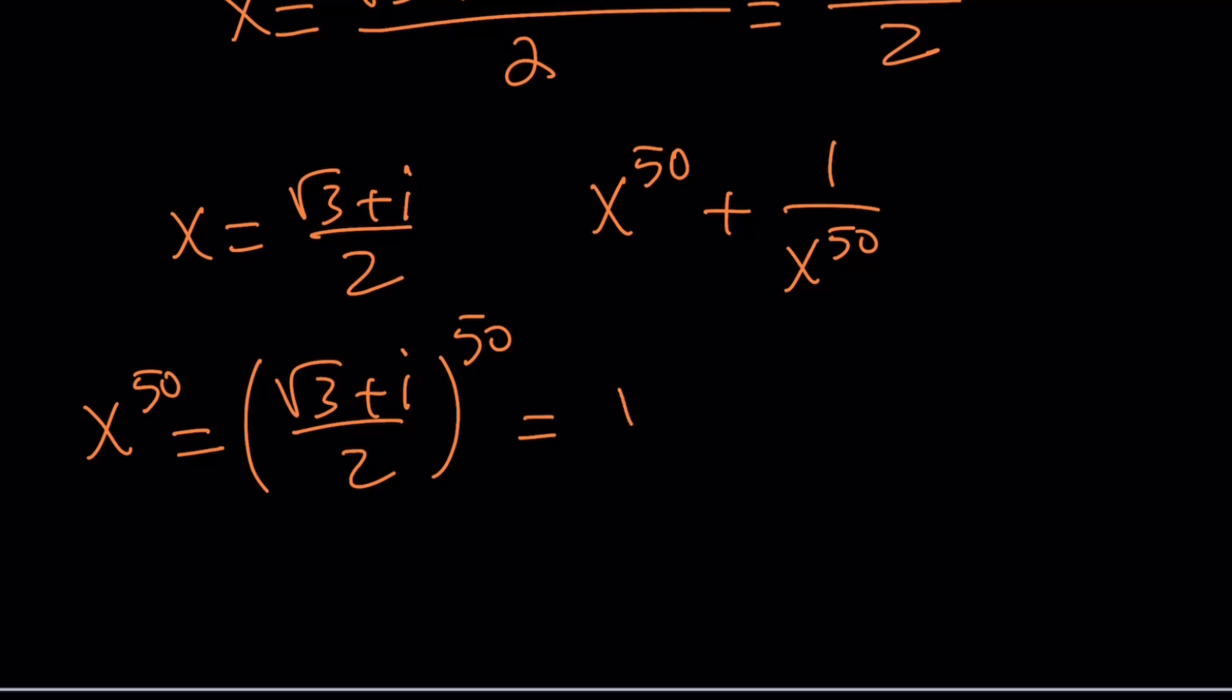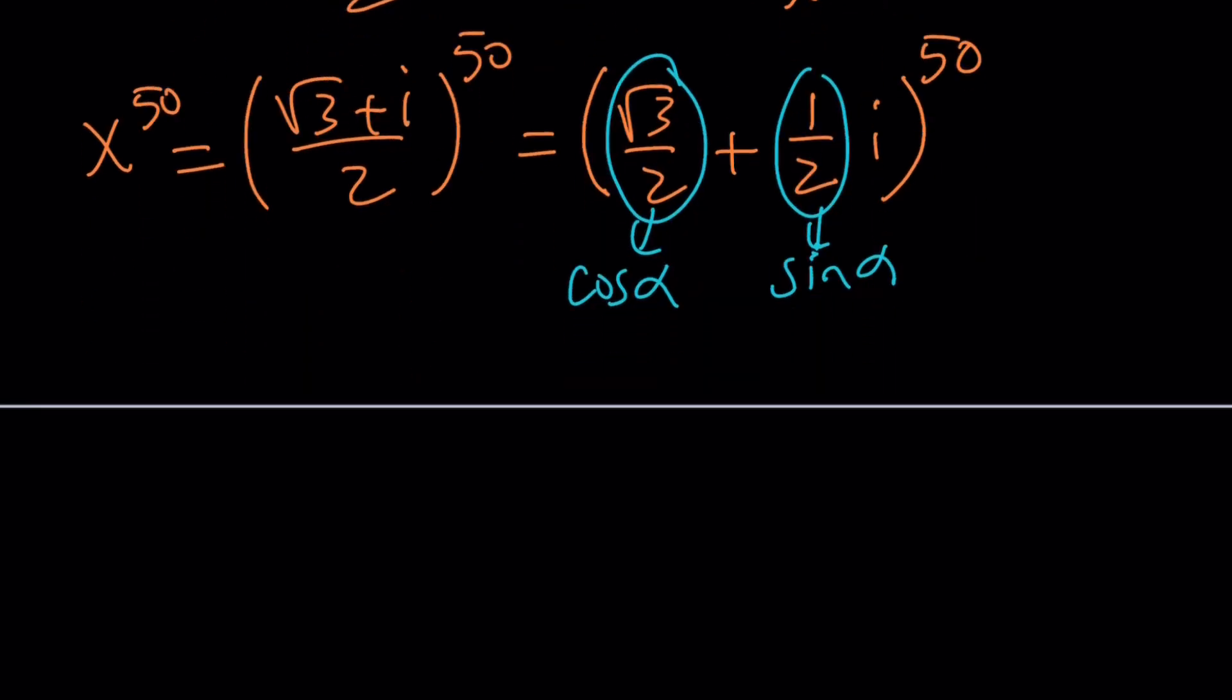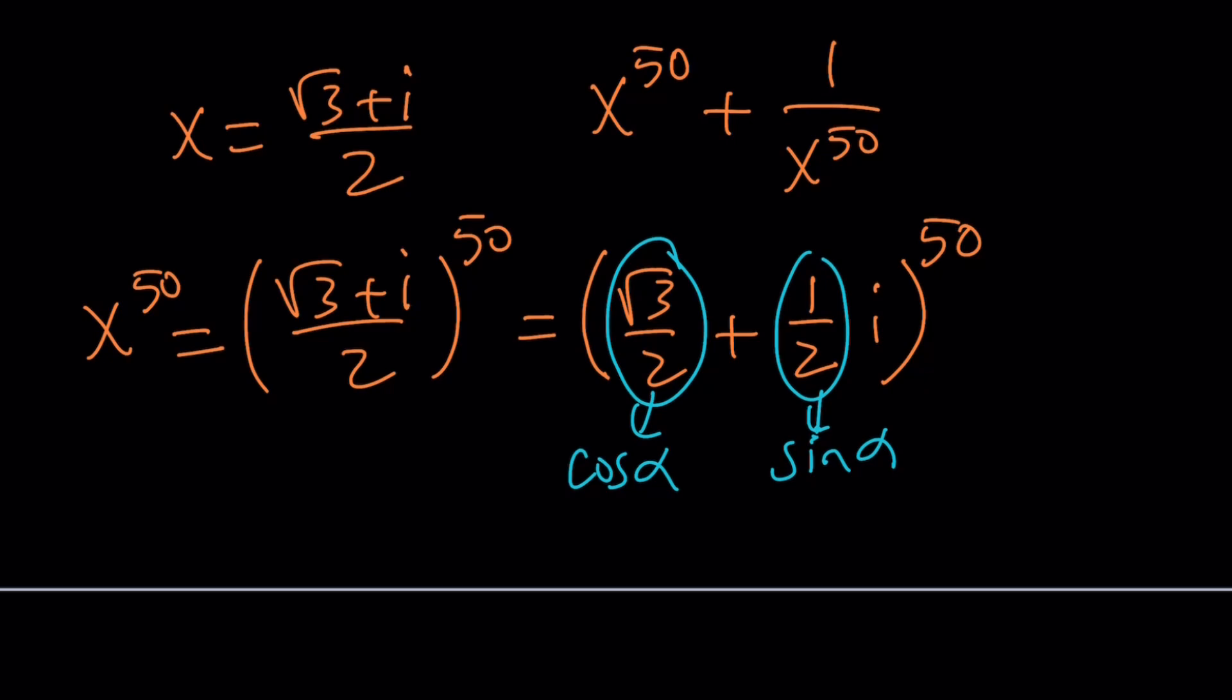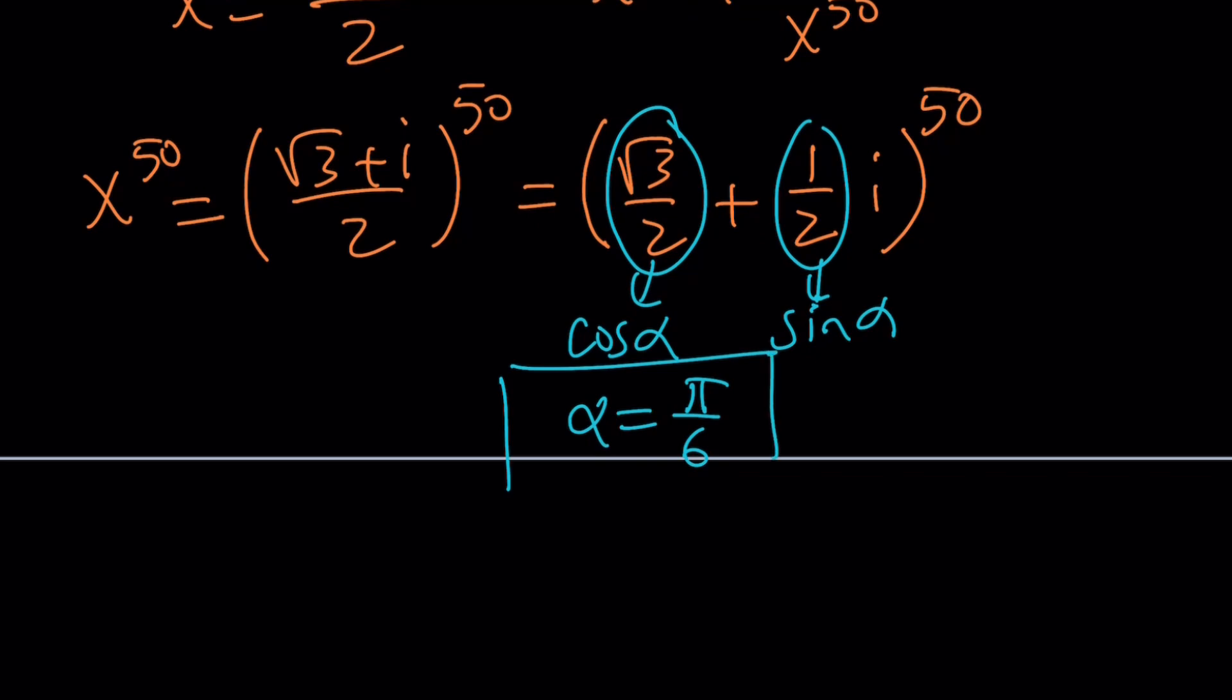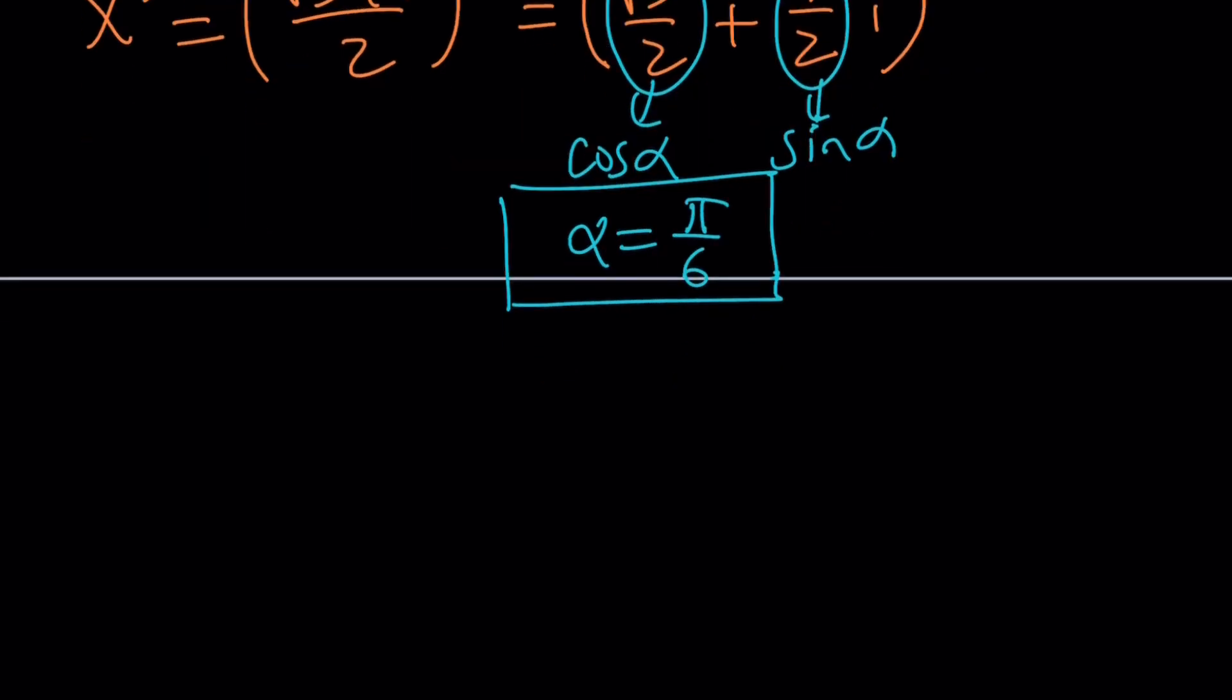Let's write this as root 3 over 2 plus 1 half i to the power 50. And we're going to use complex numbers. This is the cosine of an angle that should be familiar to you. This is cosine alpha and this is sine alpha. And this angle is in the first quadrant. The cosine of which angle in the first quadrant is root 3 over 2. If you said 30 degrees, you're right. You could also call it pi over 6.